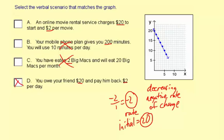Let's compare with this online movie rental service. $20 to start, and $2 per movie is the charge, so really what that means is it's adding $2 each time. So you start at $20, and then it goes up. That would be the amount you're paying this way. This is a positive rate of change.